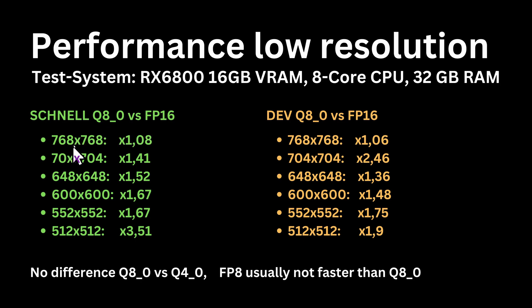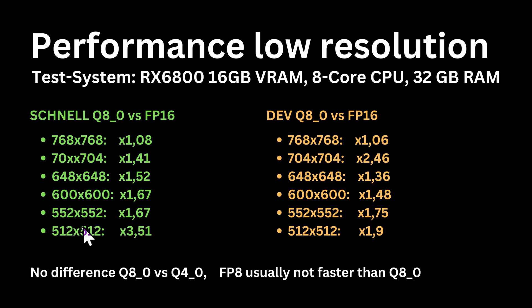For both models, as soon as I had 768x768 or lower, performance increased. And there was something very strange: the original FP16 model is very slow at 512x512 — I tried several times but there was no change. A similar effect occurred at 704x704 with the Dev model, where performance was for some strange reason very bad with the FP16 model.